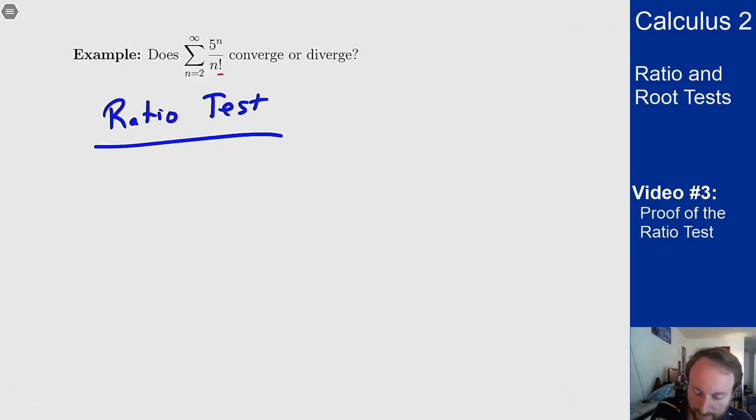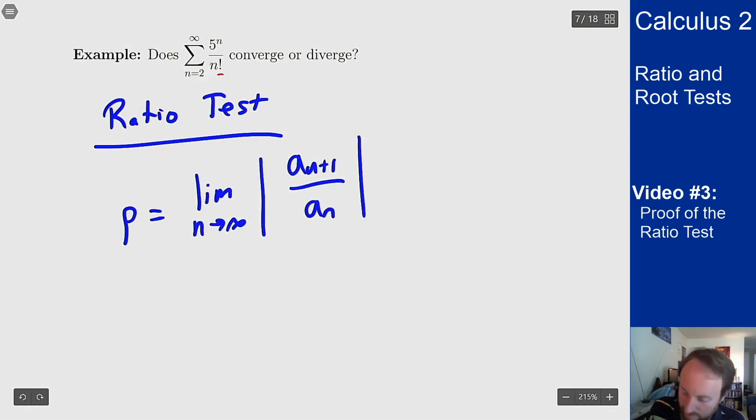For the ratio test I want to find ρ which is the limit as n goes to infinity of the absolute value of a_(n+1) over a_n. I can plug in these terms: